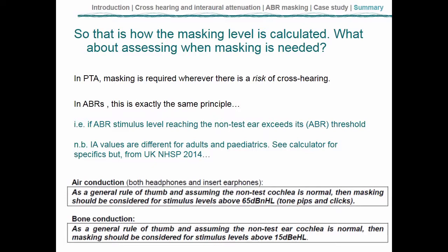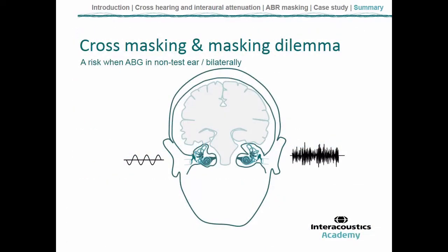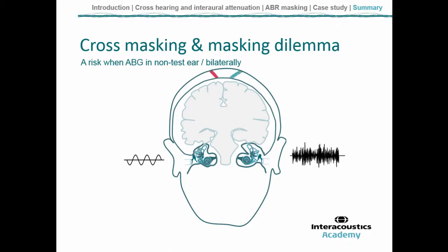I'll also mention overmasking and the masking dilemma. Just as stimuli presented to the test ear can cross over to the non-test ear, masking provided to the non-test ear can also cross over and mask the test ear if increased high enough. This creates the masking dilemma: when you inadvertently mask the test ear, you need to increase the sound level in the test ear, which requires more masking in the non-test ear, and so on. This is typically considered a risk particularly when there's a bilateral conductive loss, so tympanometry findings are important.